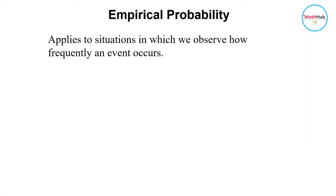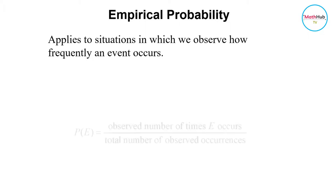For empirical probability, this applies to situations in which we observe how frequently an event occurs. We use the following formula to compute the empirical probability of an event: the empirical probability of an event E is computed as the quotient of the observed number of times E occurs and the total number of observed occurrences.